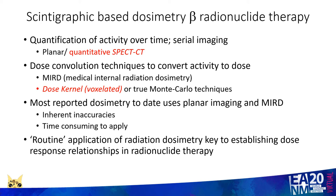Unsealed source radiation dosimetry basically includes two components: first, the quantification of activity in tissues over time using serial imaging — either planar imaging or quantitative SPECT-CT — and then dose convolution techniques to convert this activity into dose, with MIRD or voxelated Monte Carlo techniques available to do this. To date most radiation dosimetry in the field has used planar imaging and MIRD. The problem is that both incur inherent inaccuracies and are very time-consuming to apply, which perhaps explains the rather limited use of radiation dosimetry in radionuclide therapy — for which I'm a firm believer that routine application is the only way we're going to establish dose response relationships.